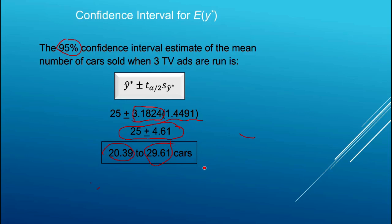If explaining this to someone in management, one might note that selling 0.39 cars is awkward to interpret, so it's reasonable to round to approximately 20 to 30 cars to avoid getting caught up explaining the nuances of confidence intervals to someone without a strong statistics background. But technically the answer is 20.39 to 29.61 cars.